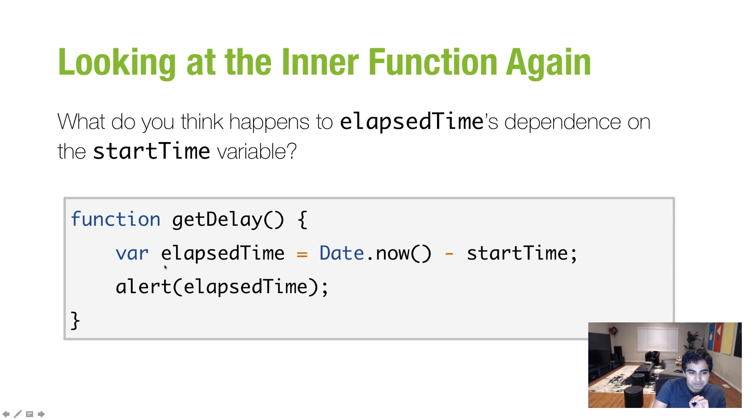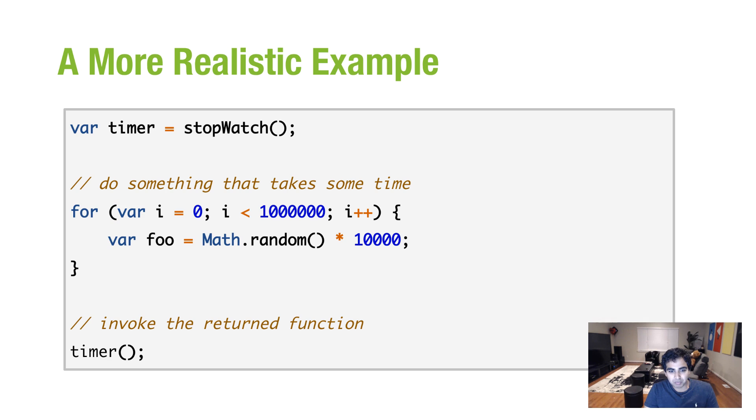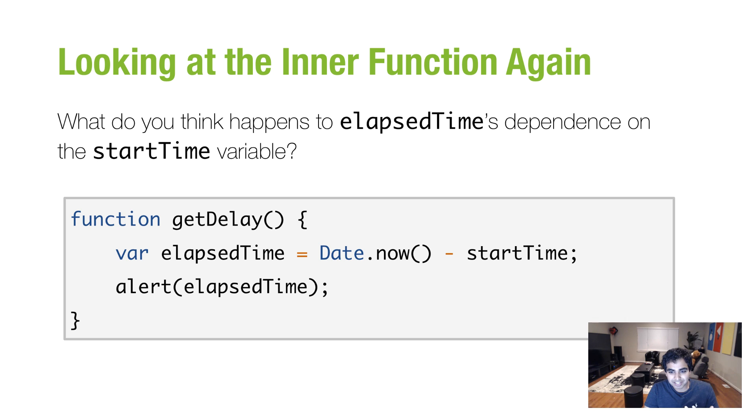It's incomplete because, let's look at the inner function one more time. You know, I called this out earlier, but let's look at it one more time in detail. The elapsed time variable, notice that it has two things that it's calculating. One is date.now, which is fine. That is something that is local to this function, it is being called at this point. And then, it is subtracting the value of the current time from the start time. And, look at the start time. It is not contained within this function, it is contained outside of it. So, the question I ask is, what do you think happens to elapsed time's dependence on the start time variable? What happens? Does it disappear? Does it stick around?